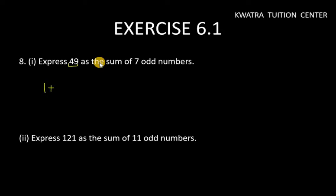First of all, we will start from 1. Then 3 plus 5 plus 7 plus 9 plus 11 plus 13. These are my first 7 odd numbers.